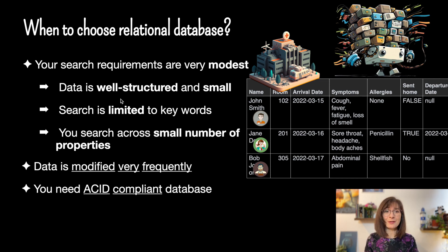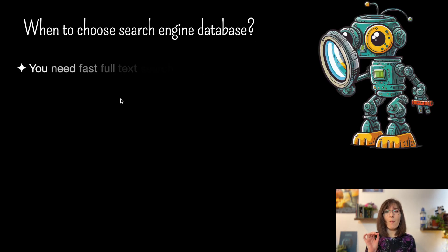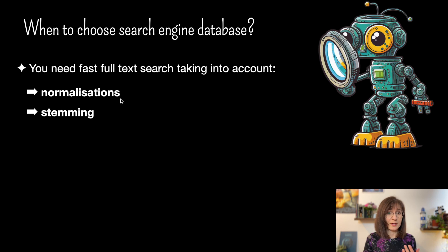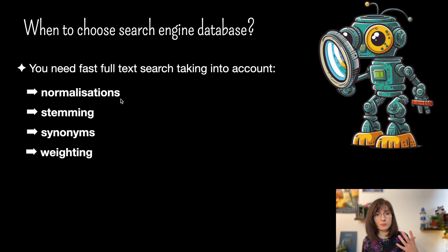But if not, let's move on and look at the search engine database. Search engine databases are significantly more powerful at full-text search. Not only are they faster at searching, but they also return better results because they take numerous things into account when analyzing data — for example, normalizations, stemming, synonyms, and weighting. Secondly, search engine databases are not limited to just stable structure. OpenSearch and ElasticSearch, for instance, rely on JSON objects containing data of different types. You can also have nested objects and so on.